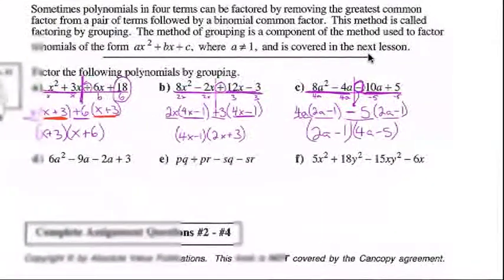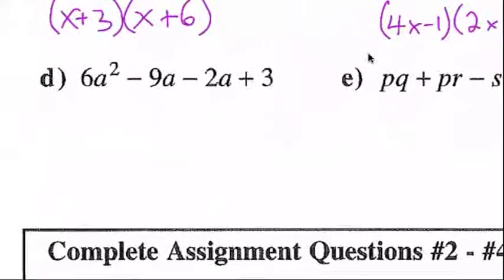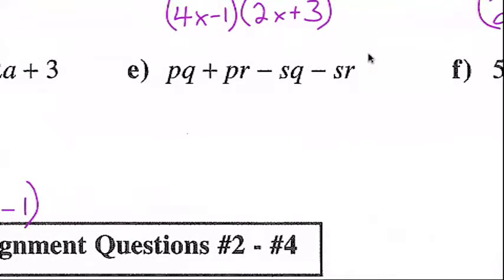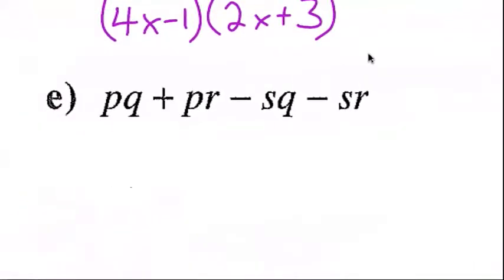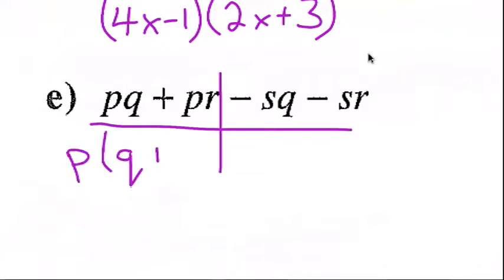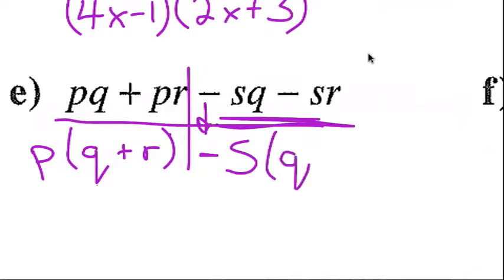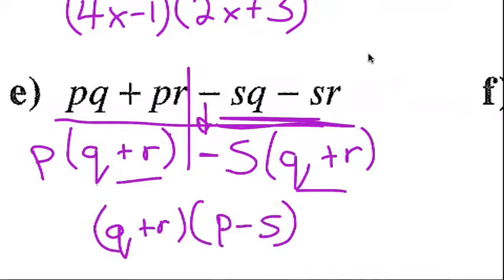I won't do example d — it's very similar; you should give it a shot. If you do d, you should get (2a − 3)(3a − 1). For example e: pq + pr − sq − sr. Draw the T. GCF of pq and pr is p, leaving q + r. GCF of sq and sr is s, but it must be negative, so −s, giving −s(q + r). Those binomials match: (q + r) is common, leaving (p − s). Final answer: (p − s)(q + r).